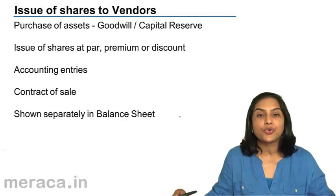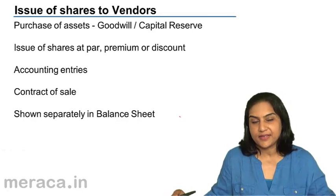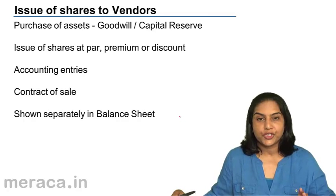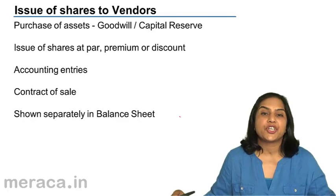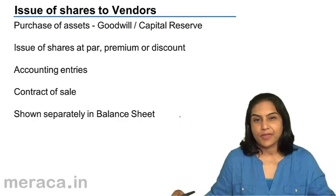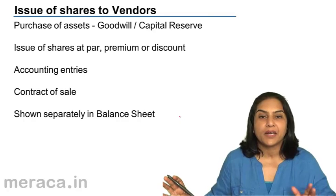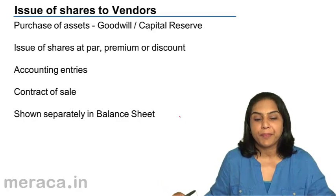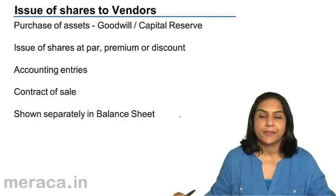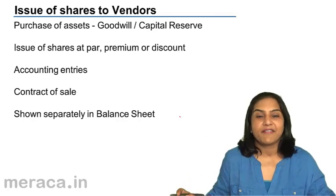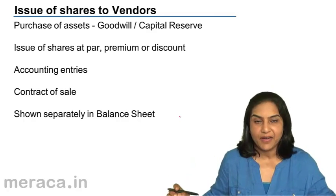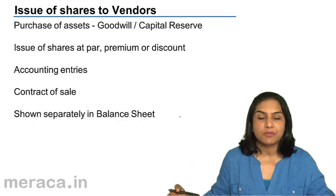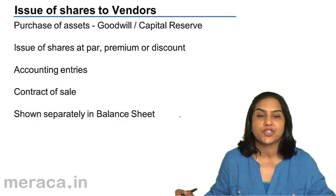Issue of shares to vendors. We purchase assets — maybe we buy plant and machinery from a particular vendor for 5 lakhs. Instead of paying cash of 5 lakhs, it's possible that we issue shares to the vendor.